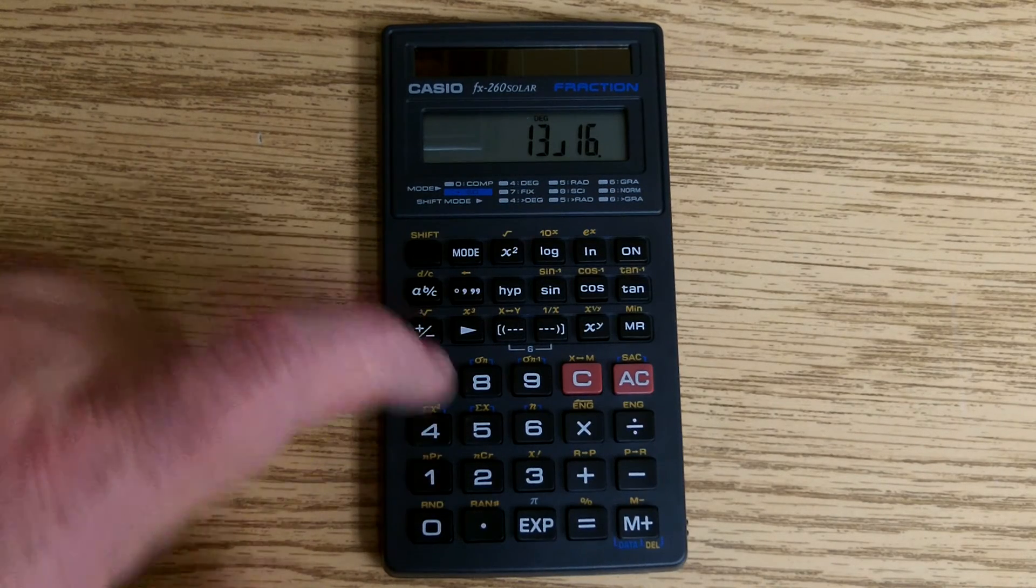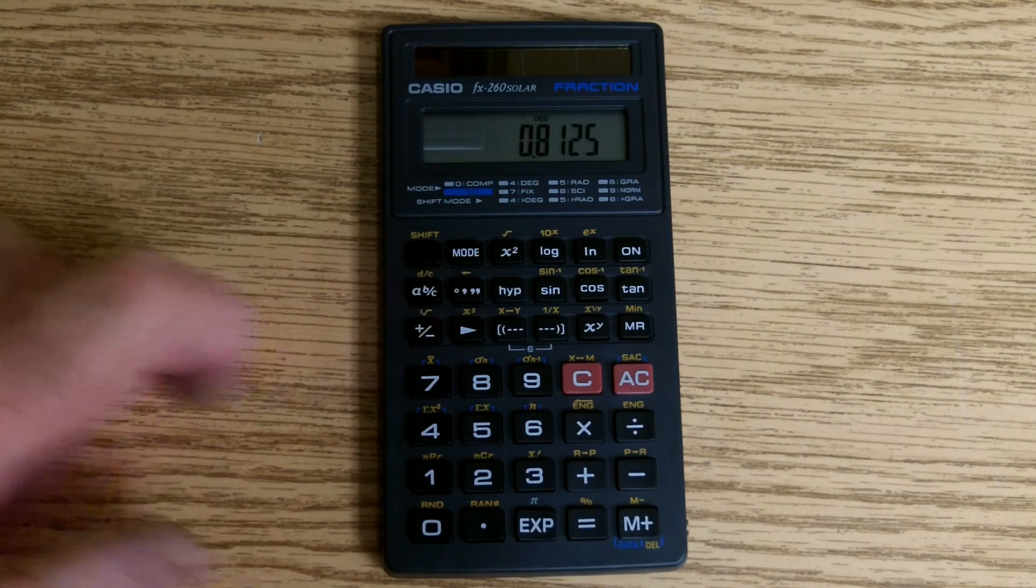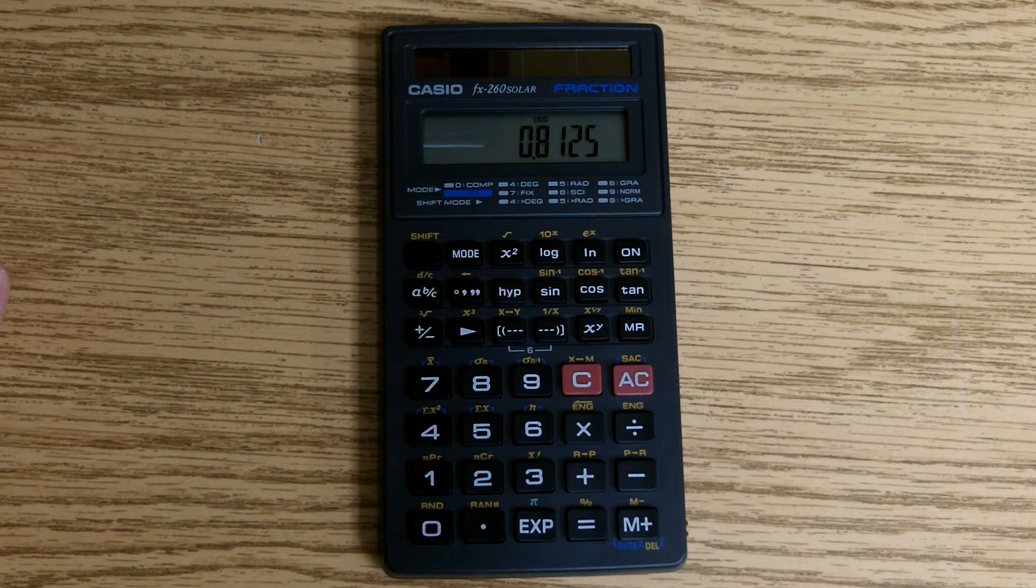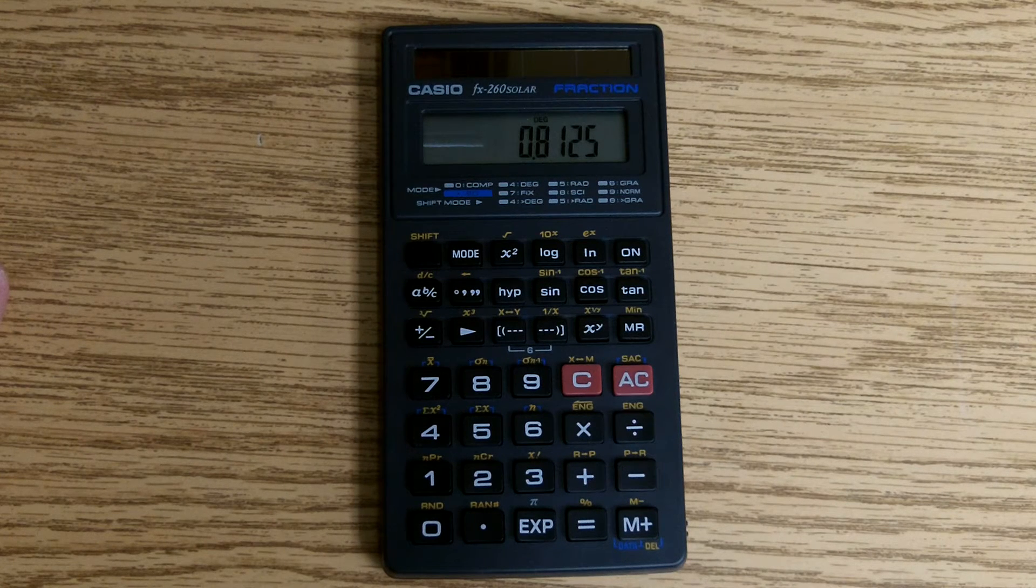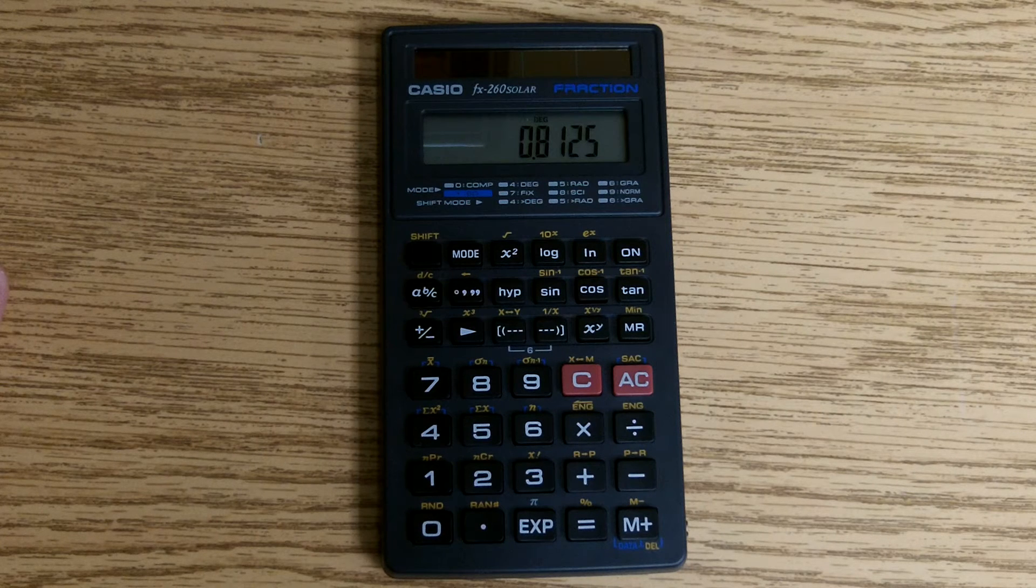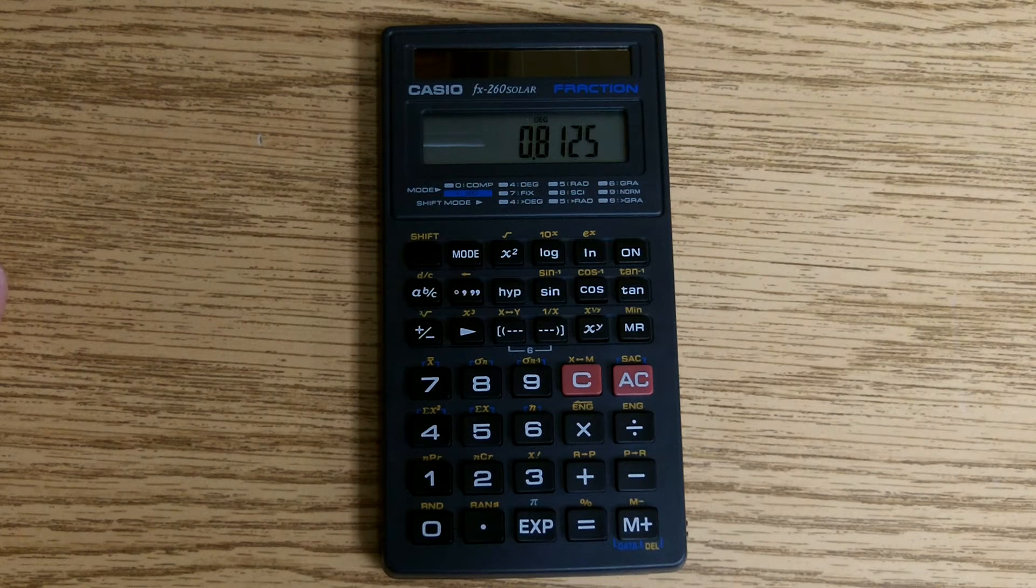Hit the ABC key again, and it will give you the decimal equivalent of the fraction. So the 13 sixteenths comes out to be 0.8125.